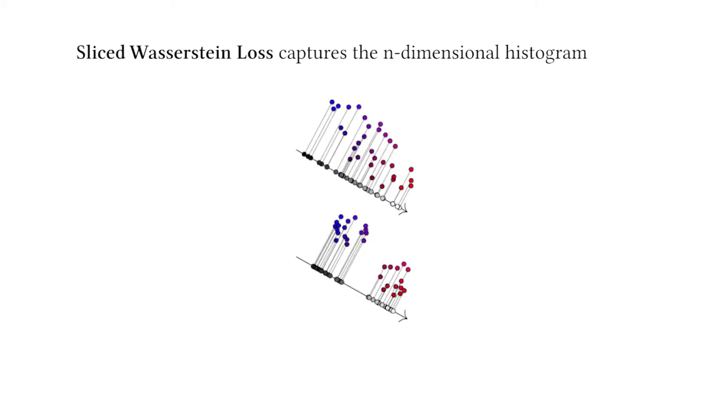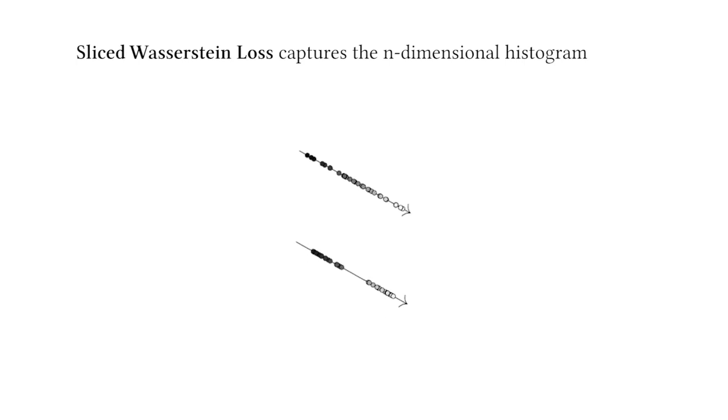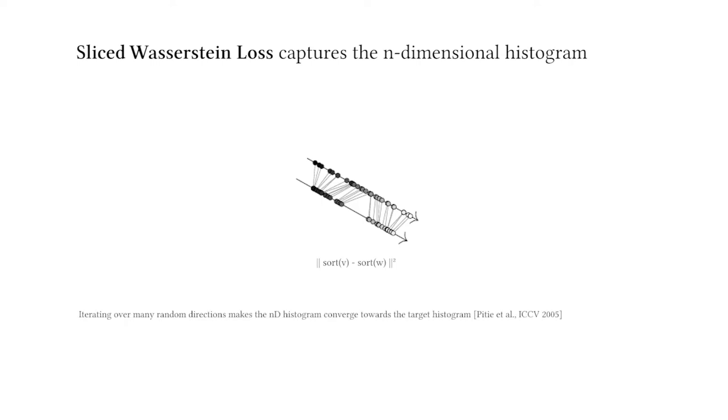Then, we project all features to each direction, and take the 1-d distance between feature vectors in 1-d, using a vector sort operation. Iterating over many directions using sliced Wasserstein loss makes the n-d histogram converge towards the target histogram.